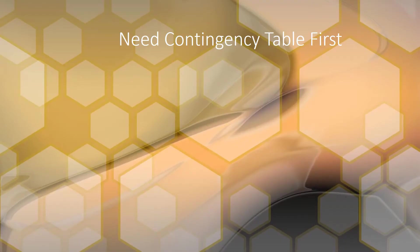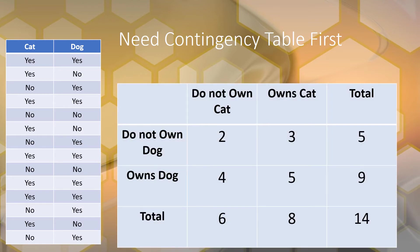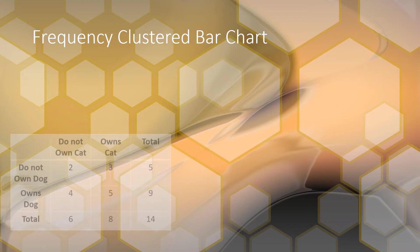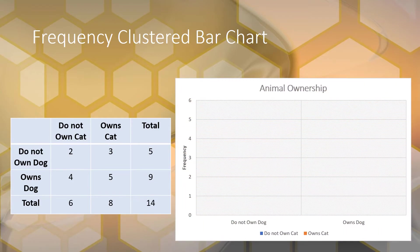First you need your contingency table before you make your clustered bar graph. Here's our data from the last video and our contingency table from the last video. I'm going to talk about how to make a frequency clustered bar chart, so first you need your contingency frequency table.